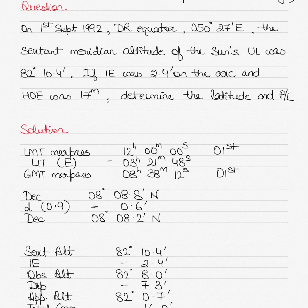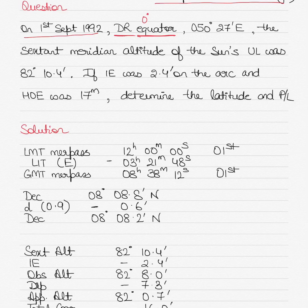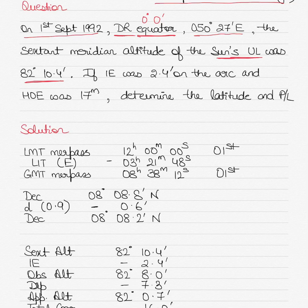Today we'll be solving a question on latitude by a meridian altitude, also known as meridian passage or merpass, using the Sun as the celestial body. The question is dated 1st of September 1992. Your DR position is latitude 0 degrees 0 minutes (the equator) and longitude 050 degrees 27 minutes east. The sextant meridian altitude of the Sun's upper limb (UL) was 82 degrees 10.4 minutes. Index error was 2.4 minutes on the arc, height of eye was 17 meters. We need to determine the latitude and position line.